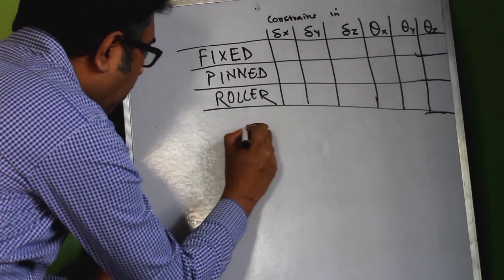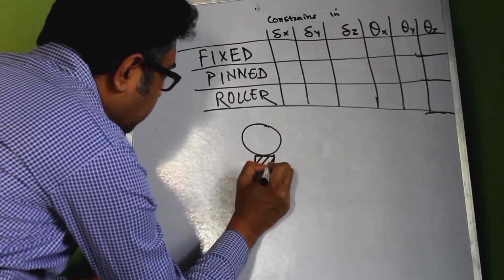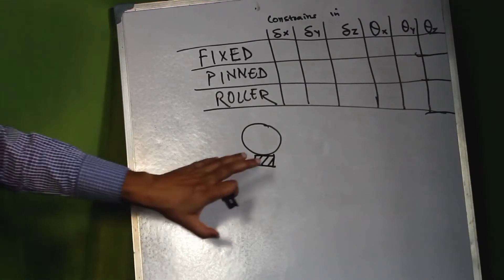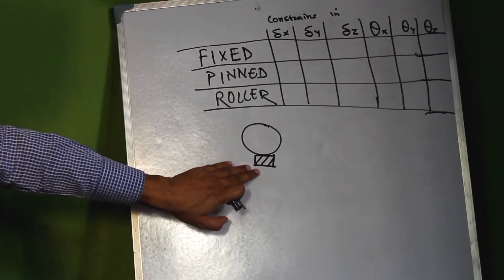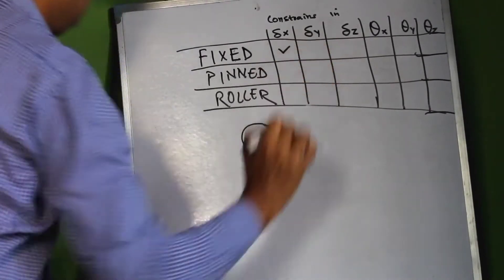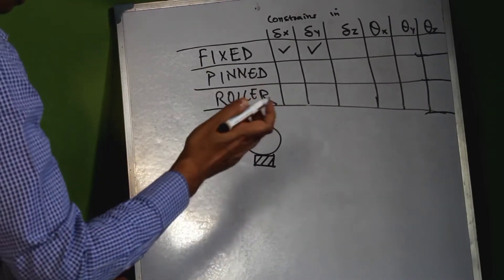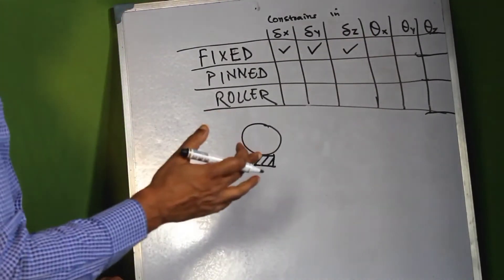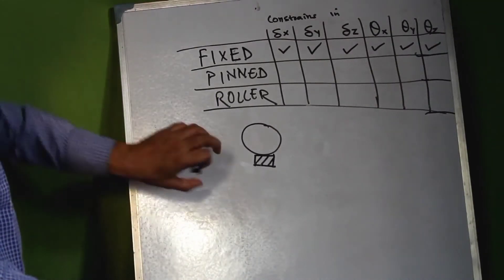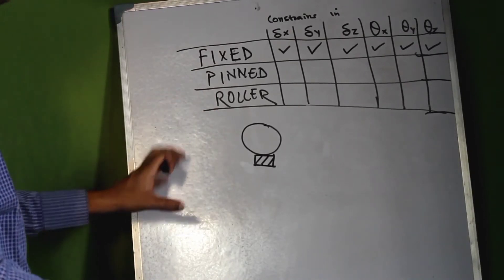Let us consider this ball to have a fixed support, which is depicted as a small rectangular box. When a support is fixed, it constrains all the degrees of freedom — along the x, y, and z directions, as well as rotations about the x, y, and z axes. So when you apply a fixed support to the ball, there is no way it could move; it is completely fixed against any rotation.